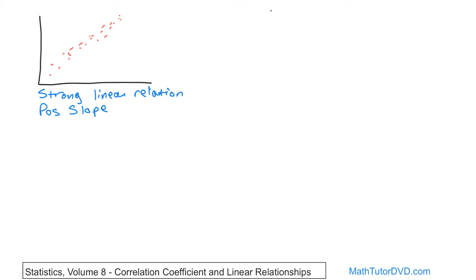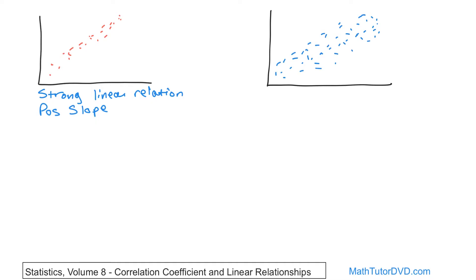Let's give an example of a weak linear relation. What if we had a scatter plot where the data more or less followed a line, but with a lot of spread in the dots? You can see that it is going up and to the right on average. But if you were to pass a line through all of these points, the data points would, on average, lie a farther distance away from the line. So there is a linear relationship, but it's not as strong because the data points were not packed tightly close to the line. We say this one has a weak linear relationship.